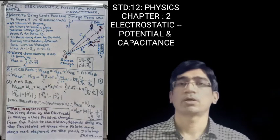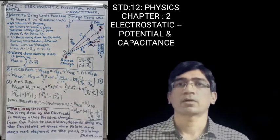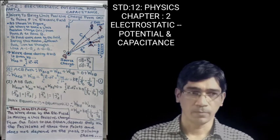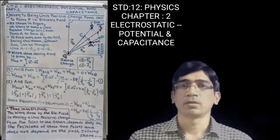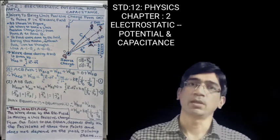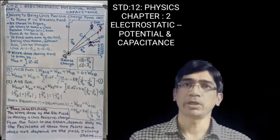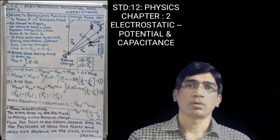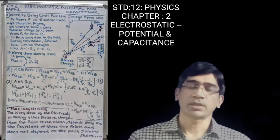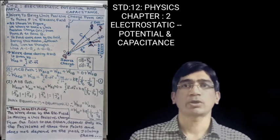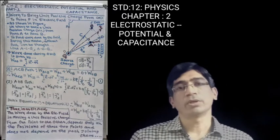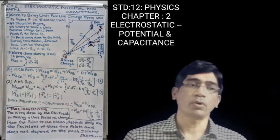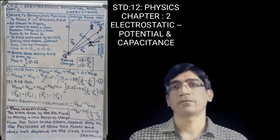For W_CB, the electric field and the small displacement are not perpendicular — they are in the same direction. So we get W_CB as non-zero. Therefore, W_ACB = W_CB = ∫(C to B) E·dr = ∫(C to B) KQ/r² dr. By taking KQ common out of the integration, we get KQ·∫r⁻² dr from C to B. Taking RC and RB as position vectors, we get the final equation: W_ACB = KQ(1/RC − 1/RB). This is the first equation.